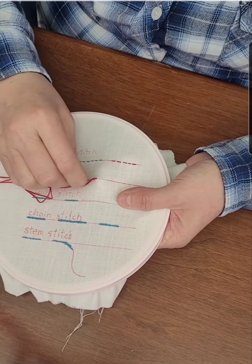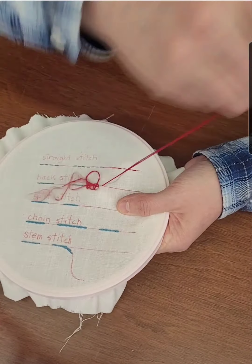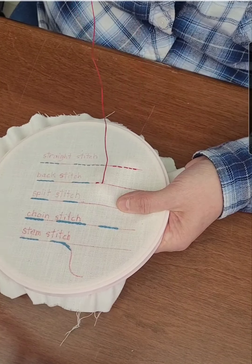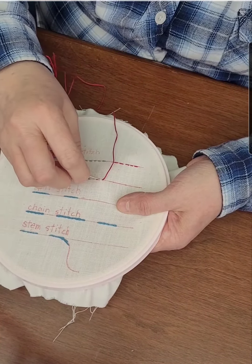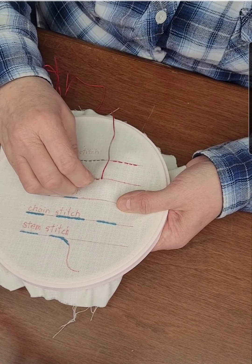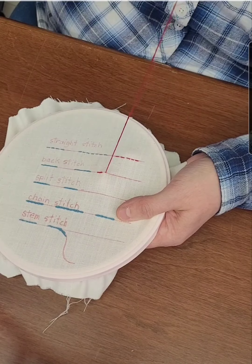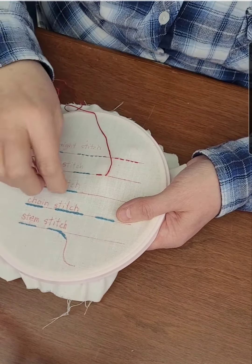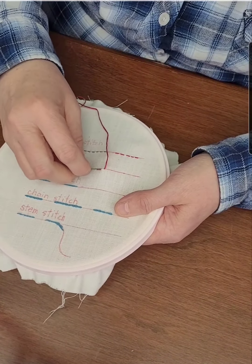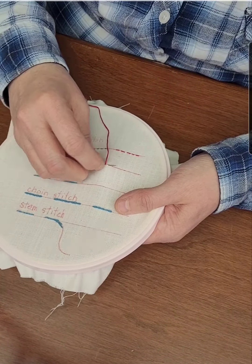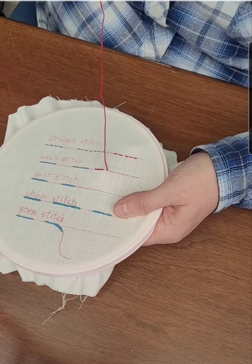So you bring up your stitch and then you're going to put your needle in again behind it and then bring it up in front of it. And then your next one's going to go into the front of the last stitch down and then up on the other side and repeat. So you go down and then you bring it up in front and pull. So that is your back stitch.